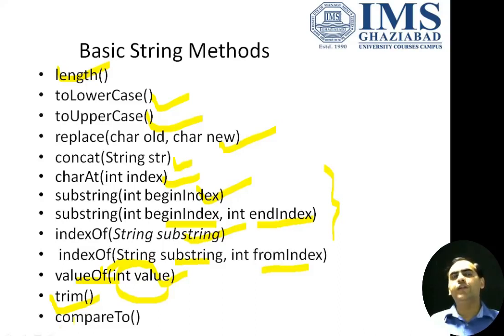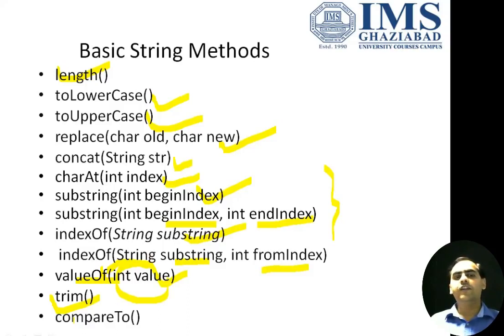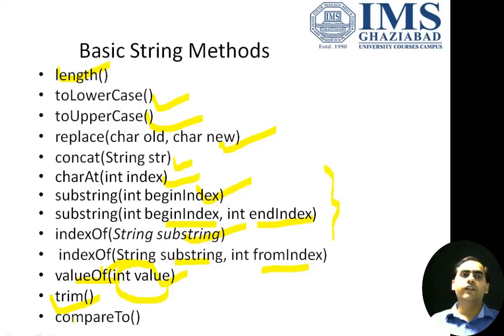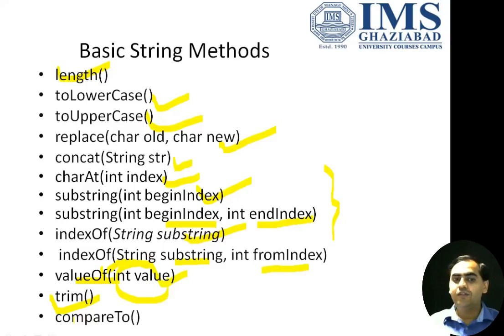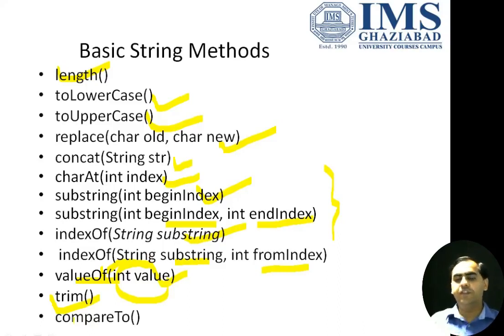The compareTo method is used to compare two strings and returns an integer value. If both strings are equal, it returns 0. If S1 is greater than S2, it returns a positive value. If S1 is less than S2, it returns a negative value. So: 0 means both strings are equal, a positive value means the first string is greater, and a negative value means the second string is greater.